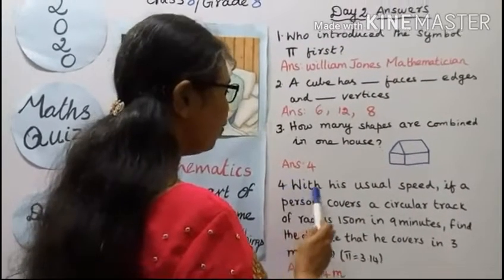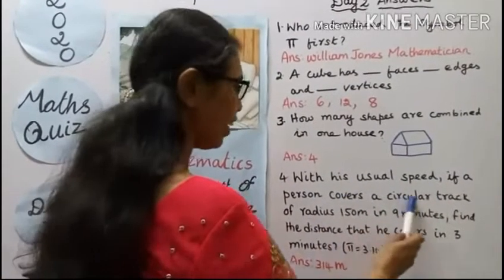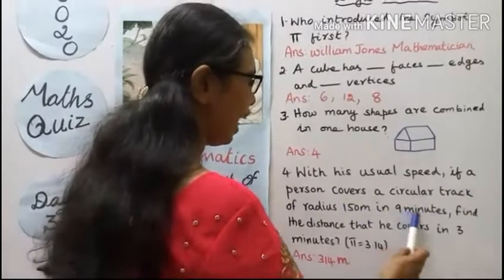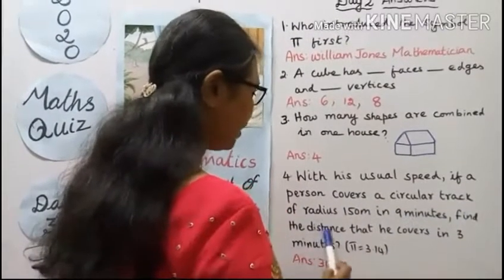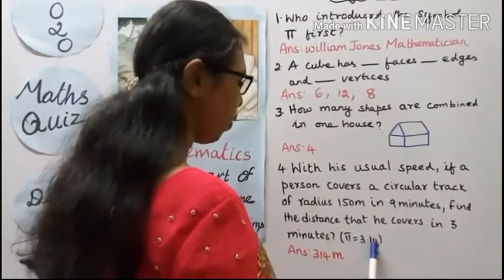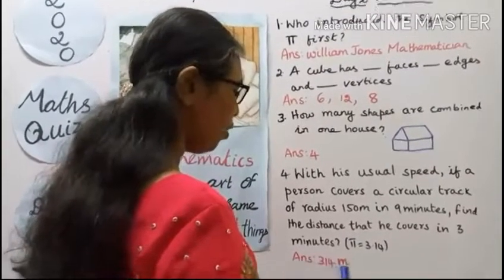Fourth question, with his usual speed, if a person covers a circular track of radius 150 meters in 9 minutes, find the distance that he covers in 3 minutes. Use π equal to 3.14. Answer: 314 meters.